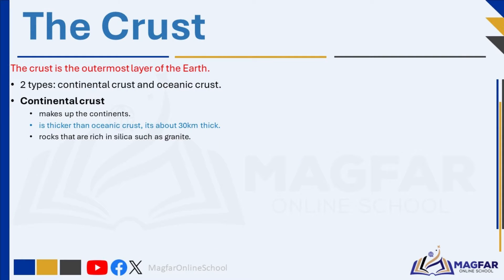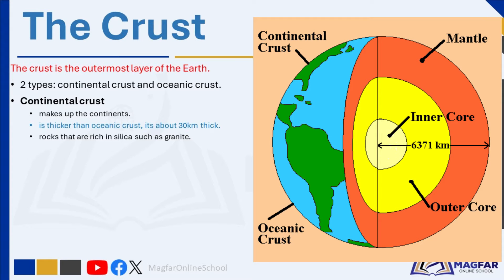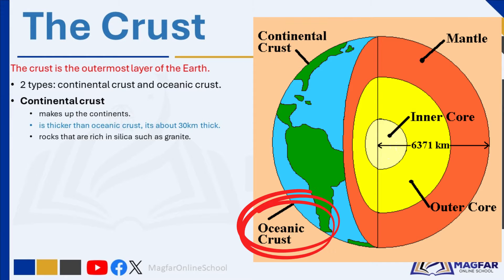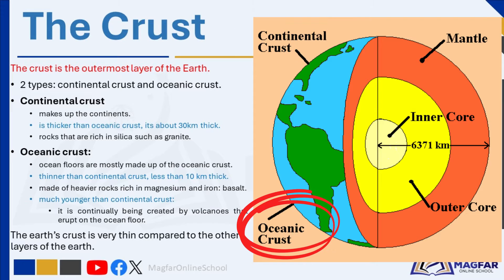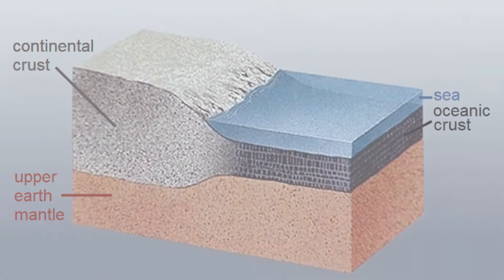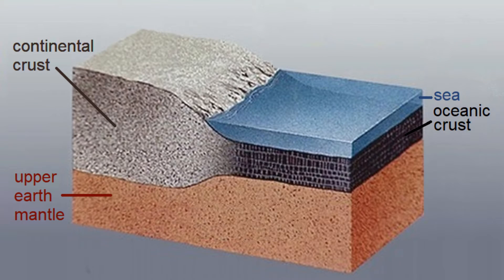The crust is important for life on Earth because it provides a stable platform for the continents, allowing for the development of land-based ecosystems. The crust is the outermost layer of the Earth and is composed primarily of solid rock. It is divided into two types: the continental crust and the oceanic crust. The continental crust is thicker and less dense compared to the oceanic crust. The ocean floors are mostly made up of the oceanic crust, while the continental crust makes up the continents. The oceanic crust is usually less than 10 kilometers thick and is made of heavier rocks rich in magnesium and iron, for example basalt.